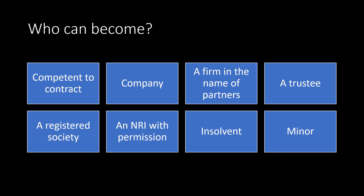An insolvent person generally cannot enter into contract, so there is no question of an insolvent person becoming a member. But if a person was already a member and later becomes insolvent, the official receiver takes over, and until the official receiver's name enters as a member, the insolvent person continues to be the member. Regarding minors: a minor cannot enter into contract and therefore generally cannot become a member. However, a minor can be given fully paid-up shares, and therefore can become a member — but the minor will not have any liabilities.